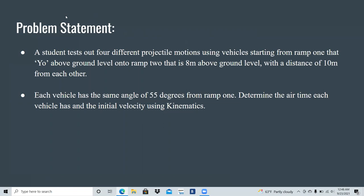So for our problem statement, we wrote that a student tests out four different projectile motions using vehicles starting from ramp one that is some height above the ground level onto a ramp two that is eight meters above ground level, with a distance of 10 meters from each other. Each vehicle has the same angle of 55 degrees from ramp one. And we are going to determine the airtime each vehicle has and the initial velocity using kinematics.